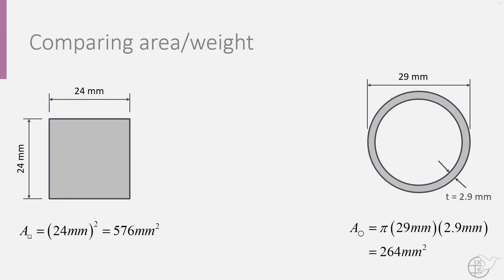However, in this case, the area and thus the weight of the tube is 46% of that of the value for the square section.